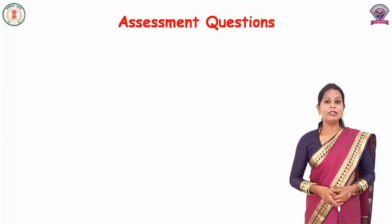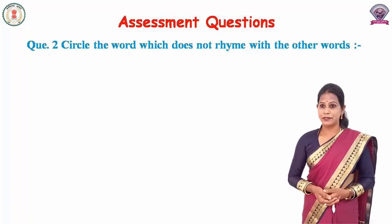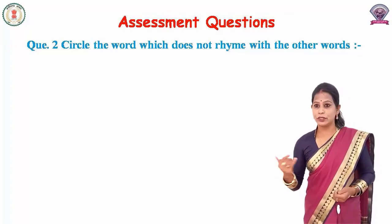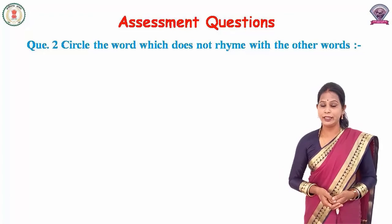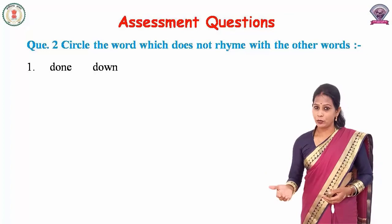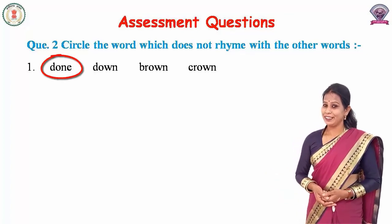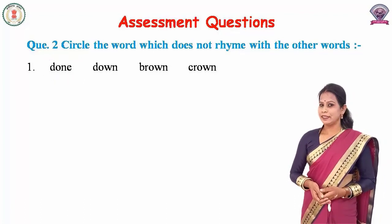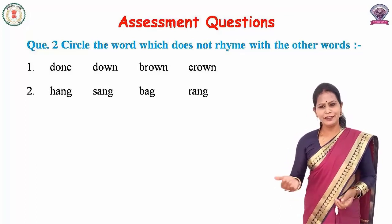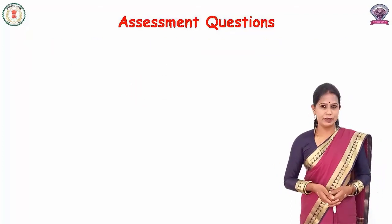Question number two: Circle the word which does not rhyme with the other words. आपको ऐसे word को circle करना है जिसकी ध्वनि दूसरे शब्दों से अलग है. First set: Done, Down, Brown, Crown — the correct word is Done. Second set: Hang, Sang, Bag, Rank — the answer is Bag.